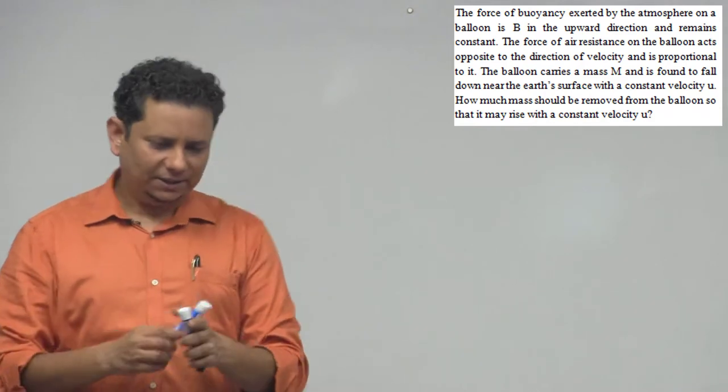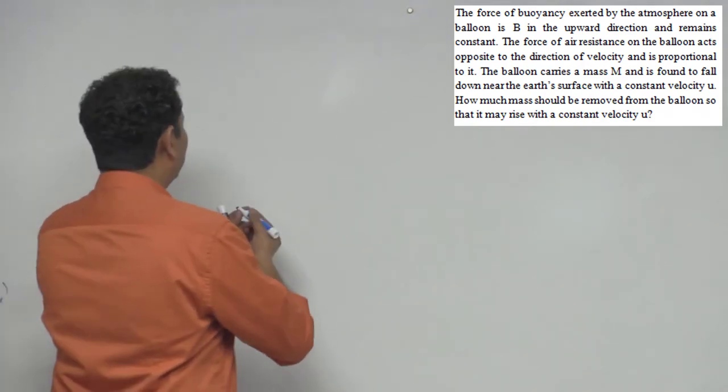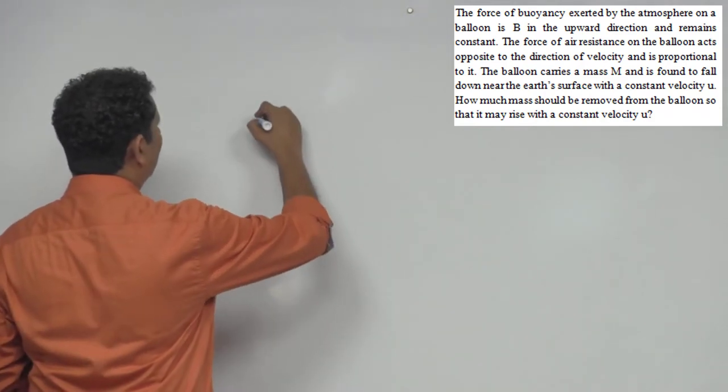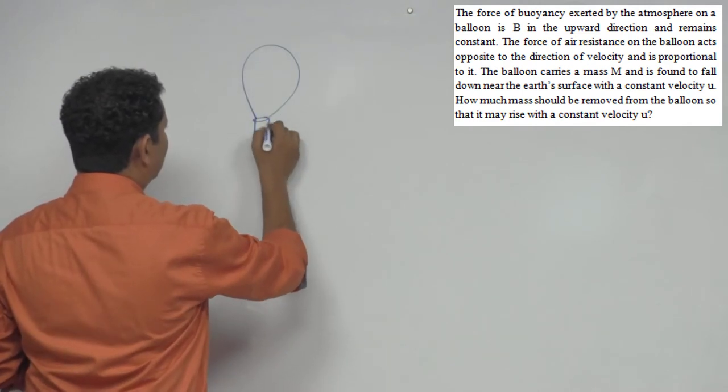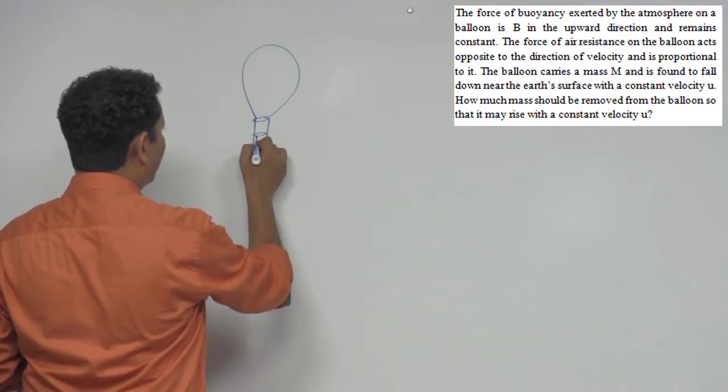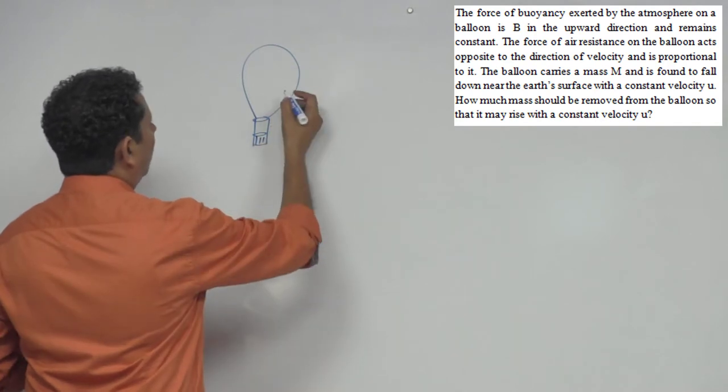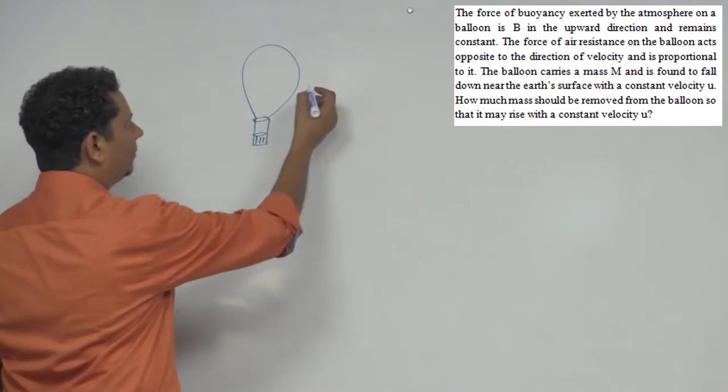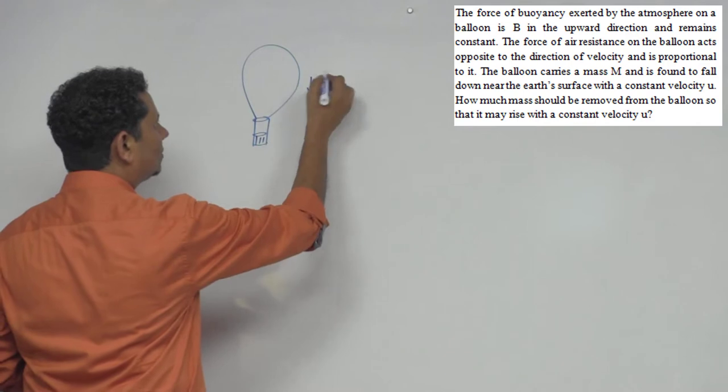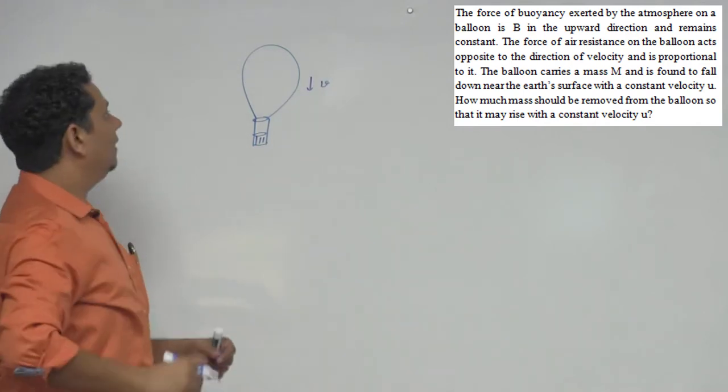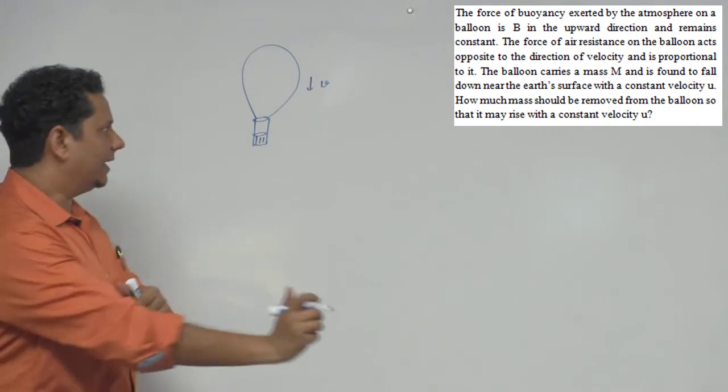If we understand the scenario, suppose this is your hot air balloon. Let's see how well we can draw it. So this is your balloon. This balloon is going downward with constant velocity U. Now the forces acting here.